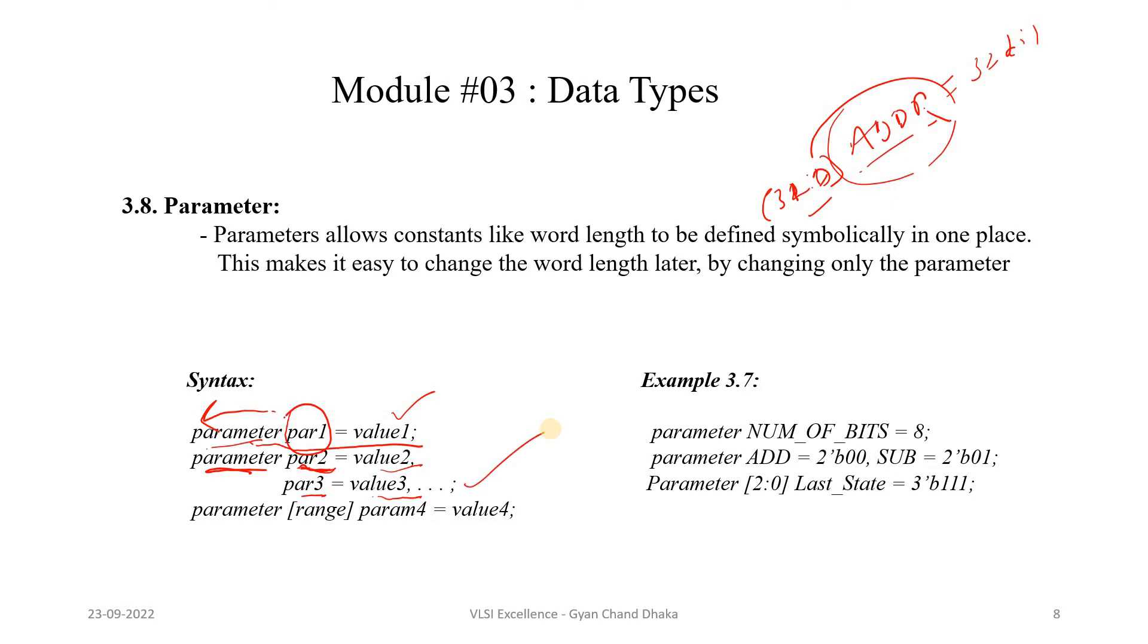If the parameter is in bit format, we can also declare the parameter in bit format where we have a parameter variable which is param4. Suppose it is a 3-bit value, then we can have range 2 down to 0 and its type is parameter. The value is value4, that can be 3'b000 for example. These are the three ways to declare a parameter.